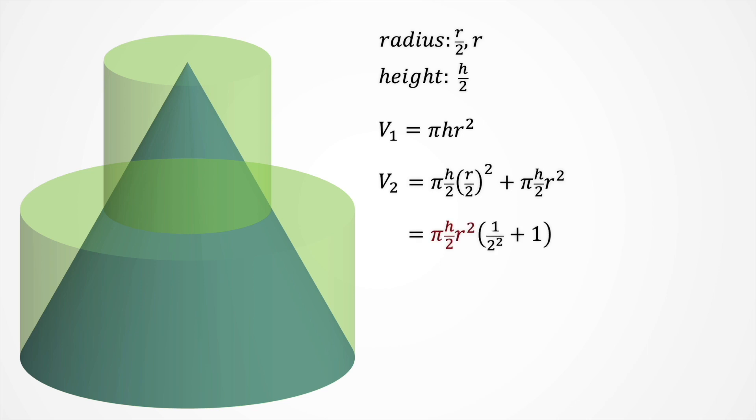Now we take the common factor π times h half times r squared. And finally, we arrange it so we have two cubed in the denominator, and one plus two squared on the right side.